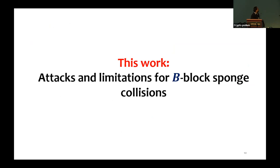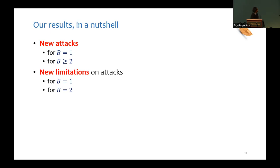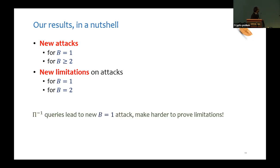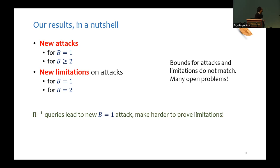In this work, we give new attacks and prove limitations for B-block sponge collisions. We give a new attack for finding one-block collisions using Hellman's random function inversion as a subroutine. We give a different attack for other values of B, inspired by rainbow tables. We prove limitations for B equals one and two using two different techniques. One important highlight is that the ability of the adversary to make inverse queries to the permutation helps us give this new attack for one-block collisions, but at the same time makes proving limitations significantly harder than for Merkle-Damgård. The bounds for the best attacks and best limitations do not match, leading to several open problems.